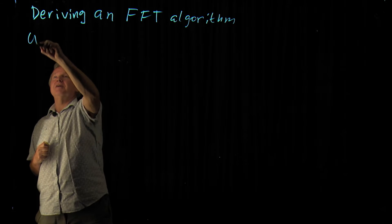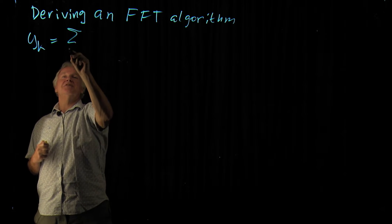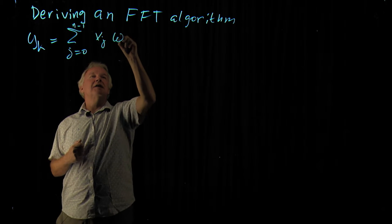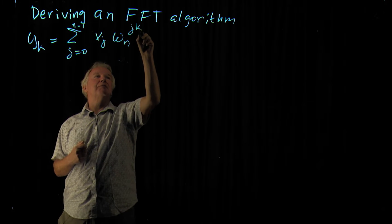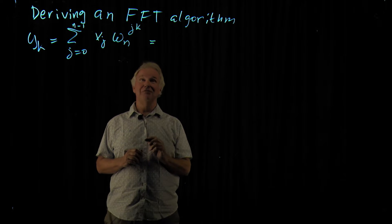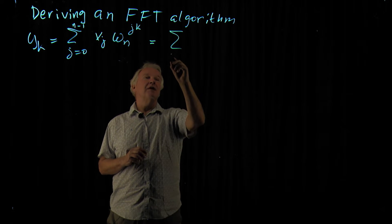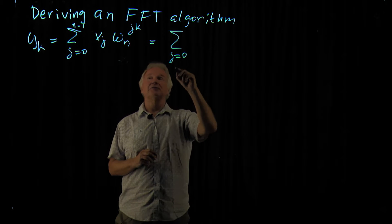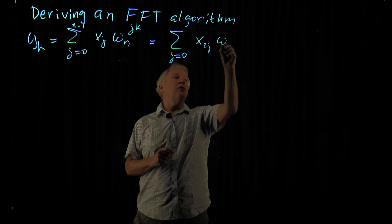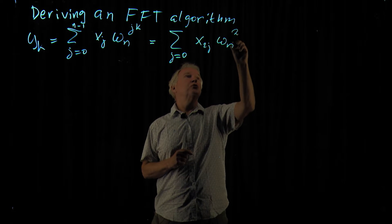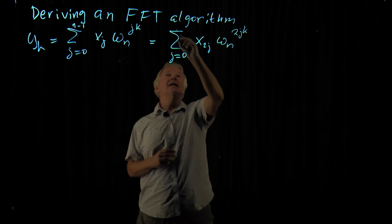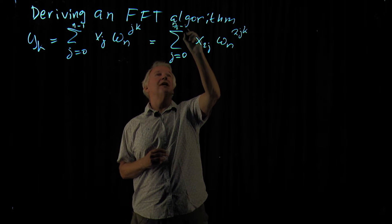We start with the definition: y_k is the sum from j equals 0 to n-1 of x_j times omega_n to the power jk. The trick is that we can separate this into even and odd terms. So we start with j equals 0, but only take x_{2j} omega_n to the power 2jk. And then since we finish at n-1, here we have to finish with n/2 minus 1.